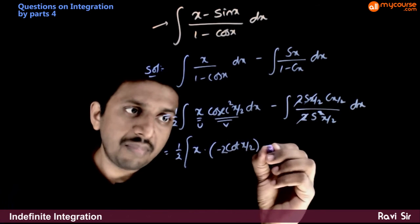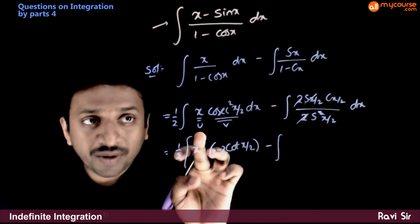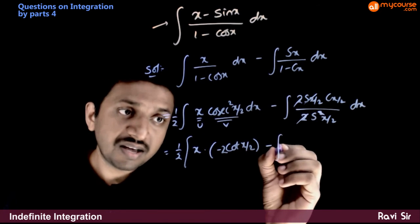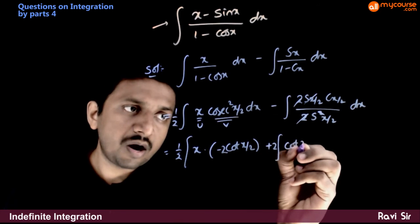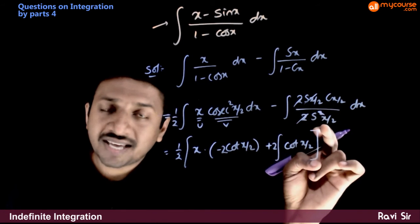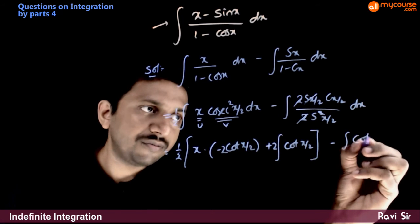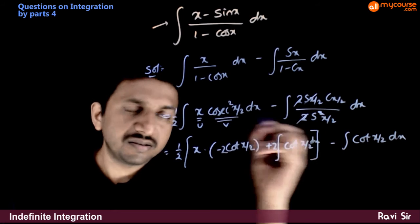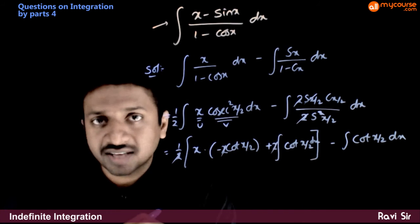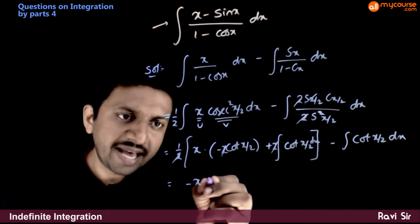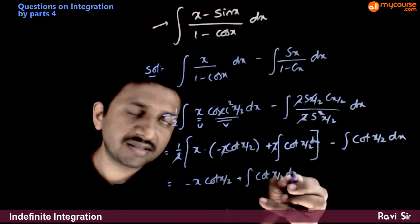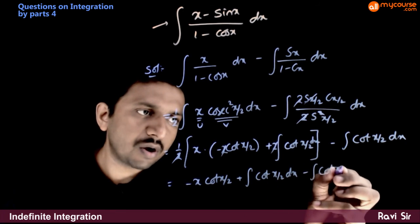So applying the IBP formula: u·integral(v) minus integral of (du/dx · integral(v)). x's differentiation is 1. So du/dx times the integral gives minus 2, making it plus 2 cot(x/2). Then we subtract the integration of cos(x/2) by sin(x/2), which is cot(x/2), so it is integration of cot(x/2) dx. The 2 and 2 cancel, giving minus x·cot(x/2) plus integration of cot(x/2) dx, minus integration of cot(x/2) dx.